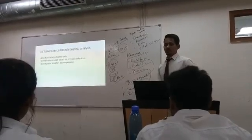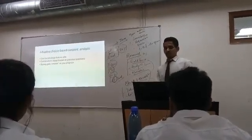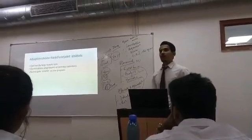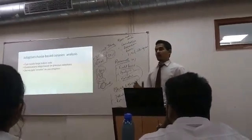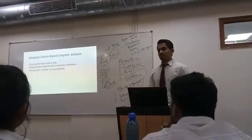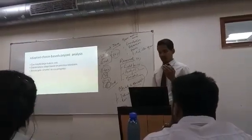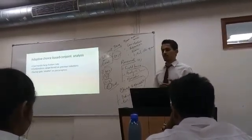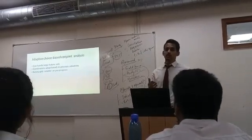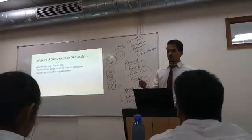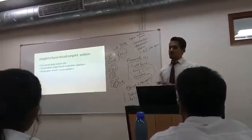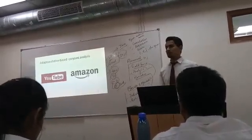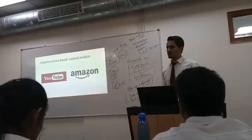Adaptive choice-based conjoint analysis can handle large numbers of features and is based upon your previous selections. For example, if you buy a book from Amazon and a new book releases, it recommends whether you want to buy it. Similarly, on YouTube, if you are searching for old songs, it will recommend more old songs for you. Both of these come under adaptive choice-based conjoint analysis.